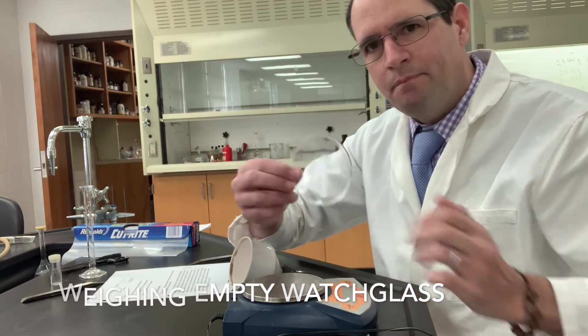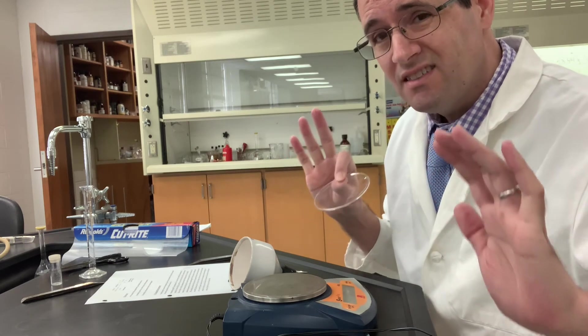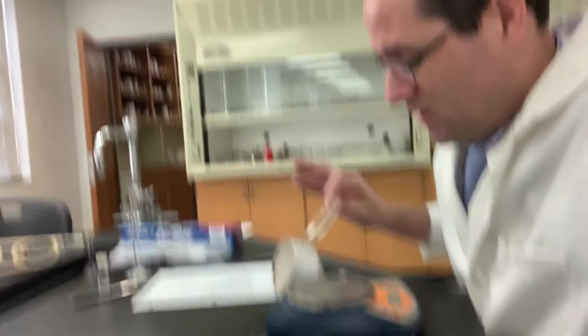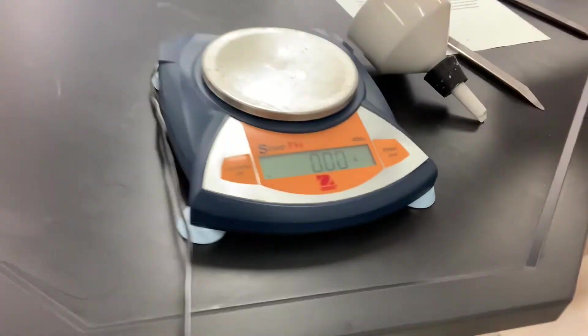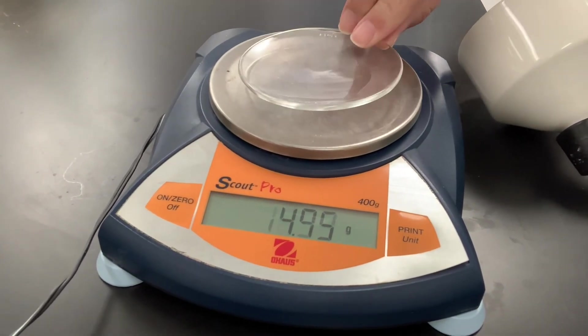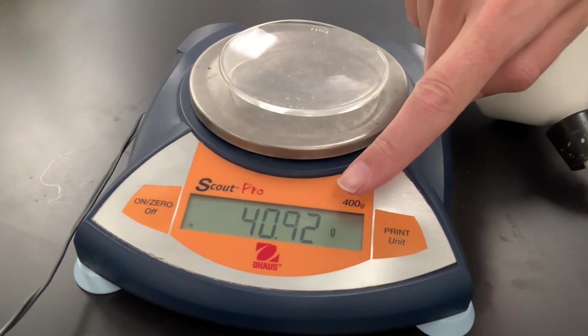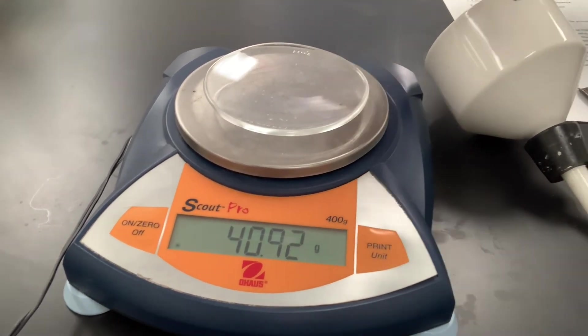For the weighing step, I have a watch glass here. The substance is not dry yet. What we're going to do is just weigh the empty watch glass, clean and dry, basically taring it. So write this number down here in your lab notebook.